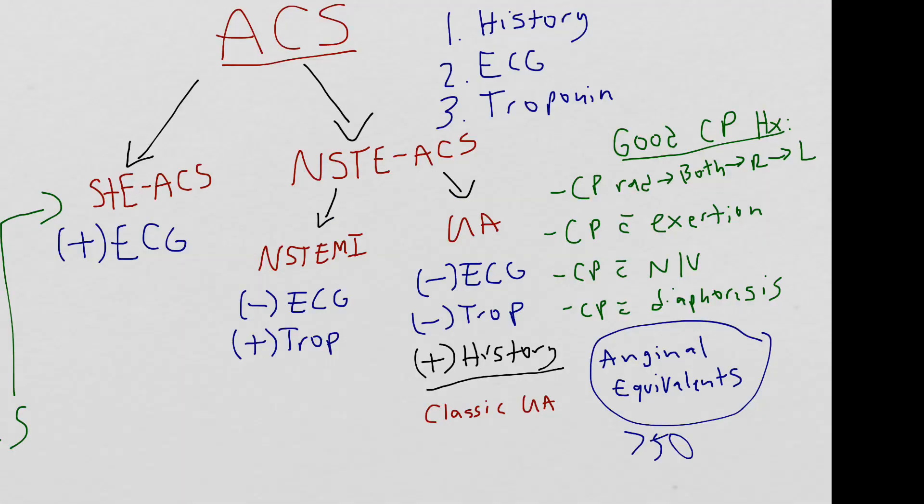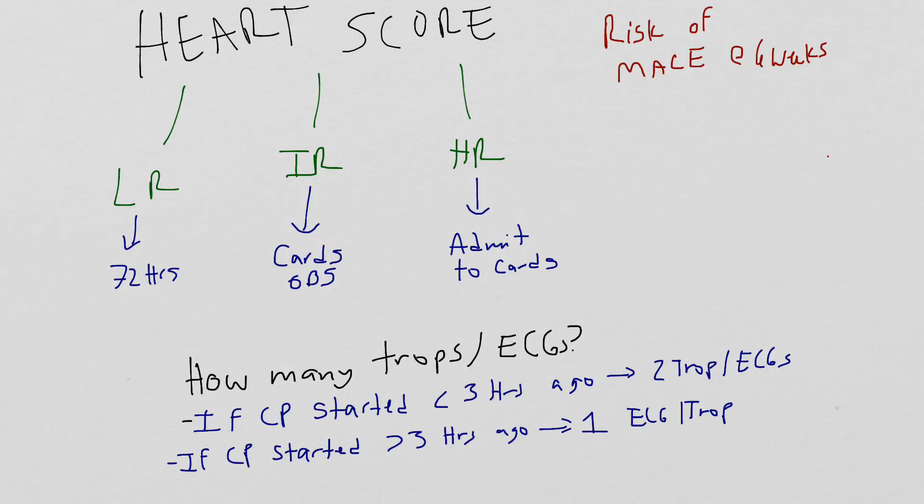And just remember, when you're saying that the patient has been ruled out for ACS, all you're saying is that they don't have a STEMI and that they don't have an NSTEMI. You have not determined with just EKGs and troponins if the patient has unstable angina. For you to be able to determine the patient's risk for unstable angina, you have to calculate a heart score.